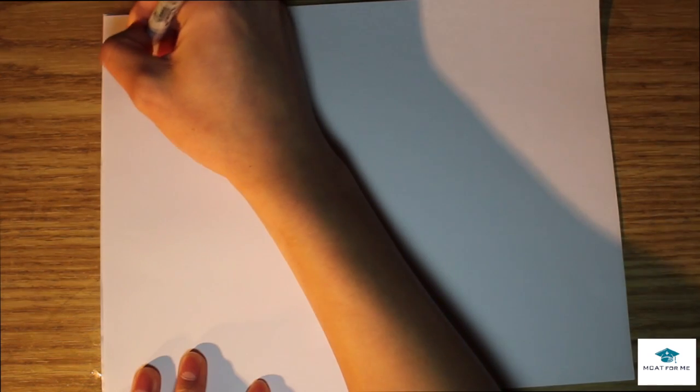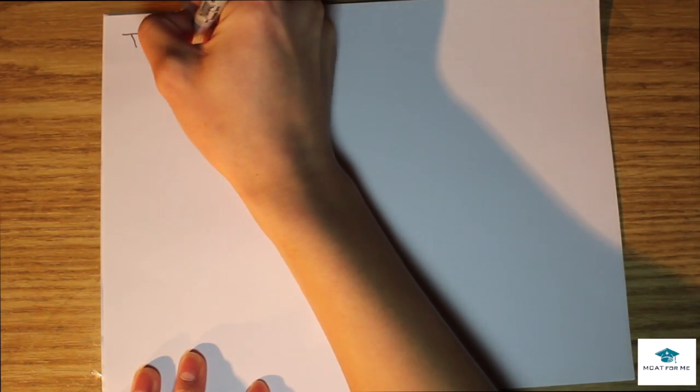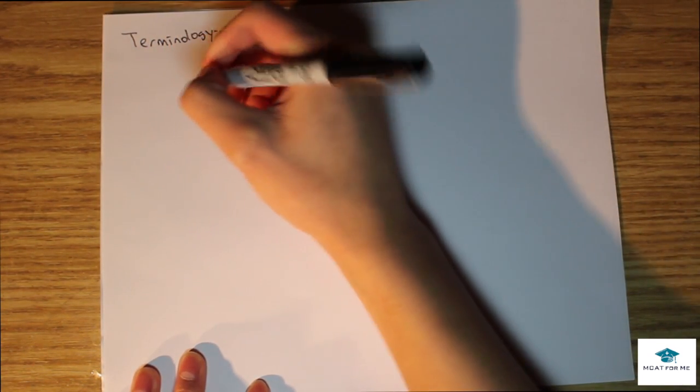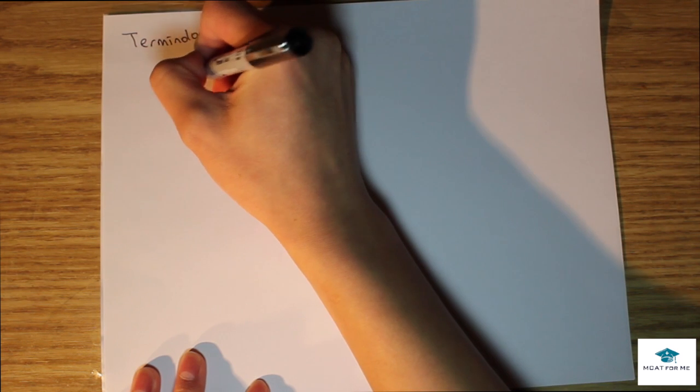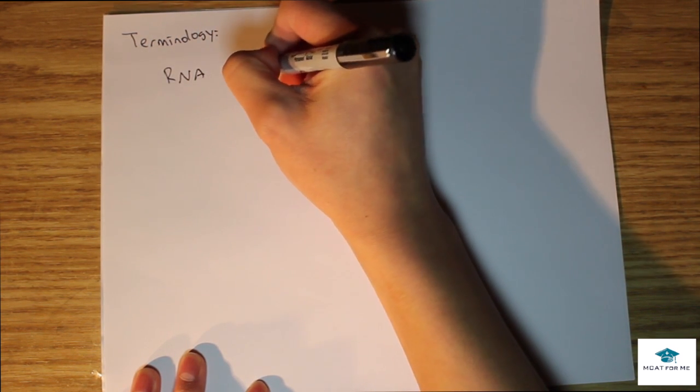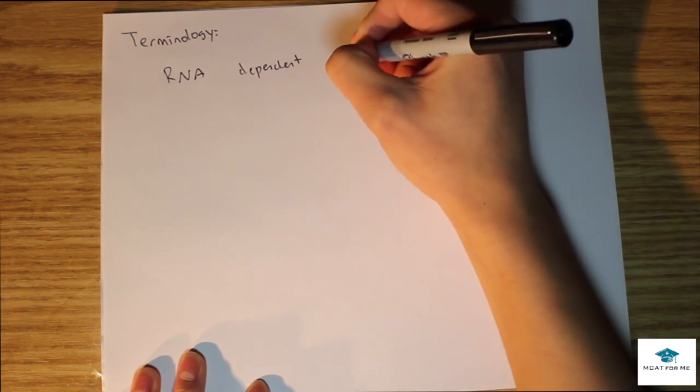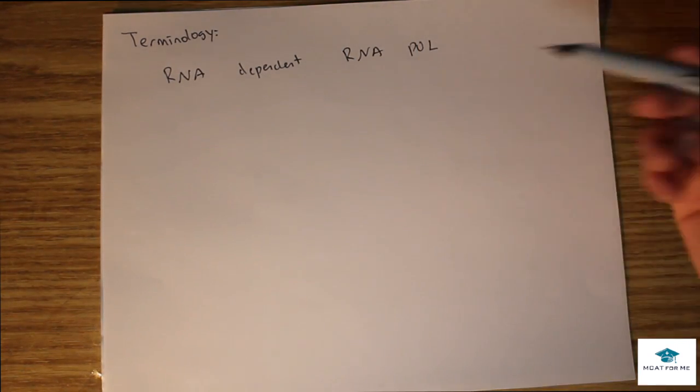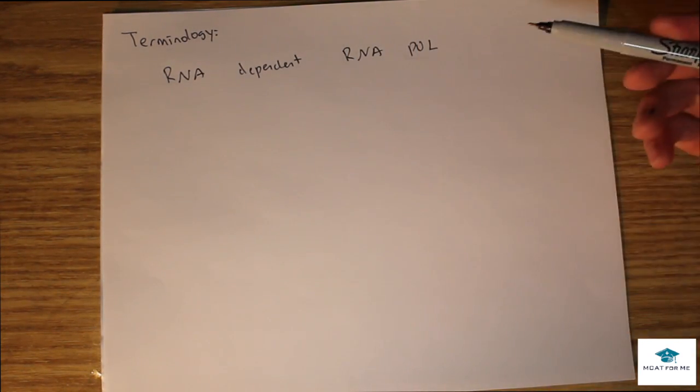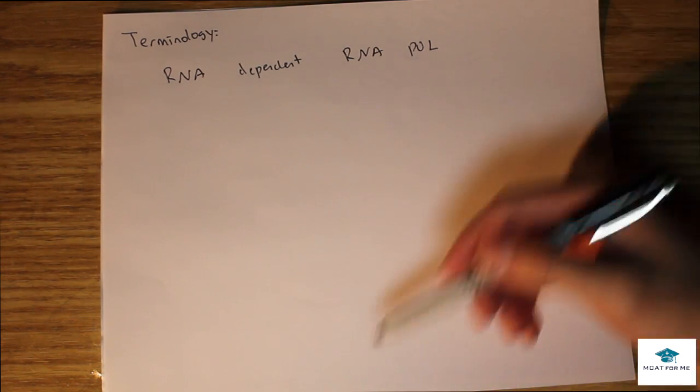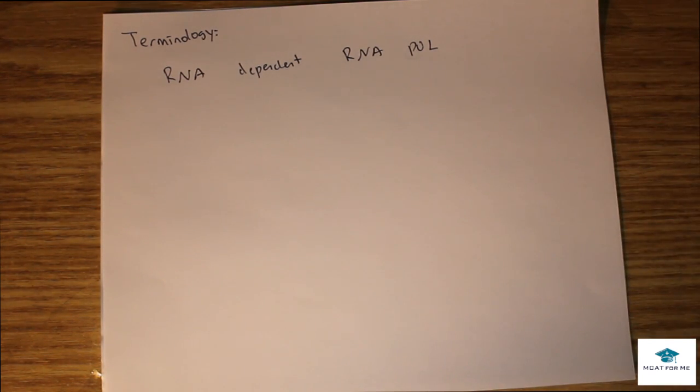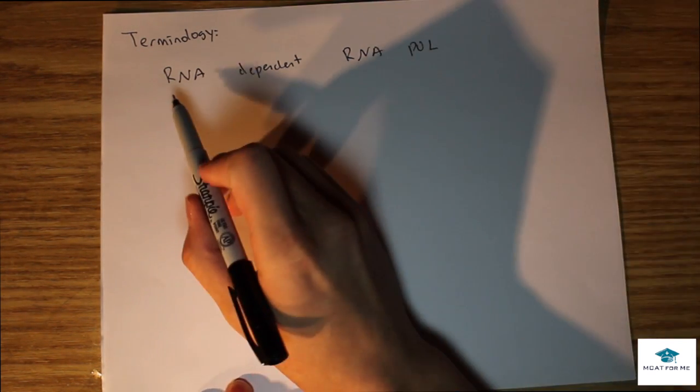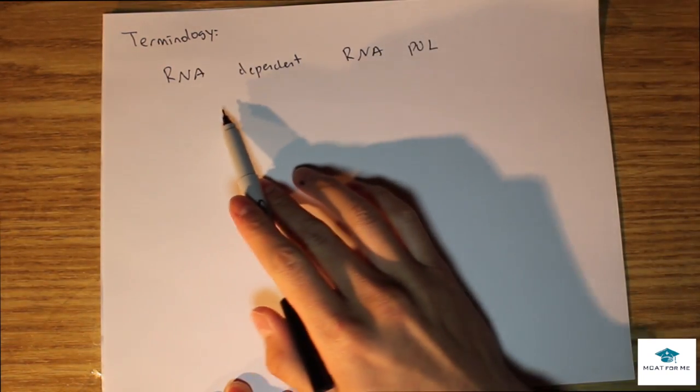The last thing we're going to be looking at is just basic terminology. We're going to be looking at phases like this. We'll see this pretty rapidly on the MCAT actually, stuff like RNA dependent RNA polymerase, and we'll see also RNA dependent DNA polymerase, DNA dependent DNA polymerase.